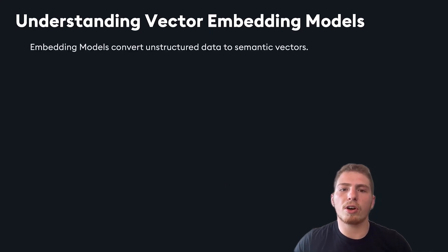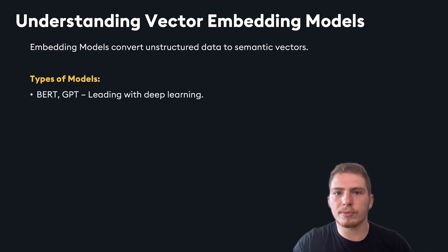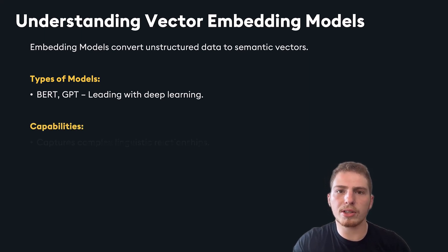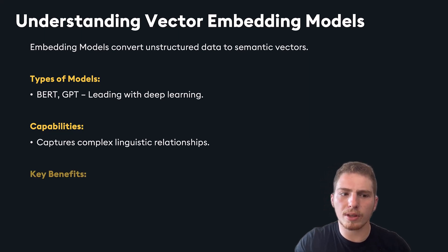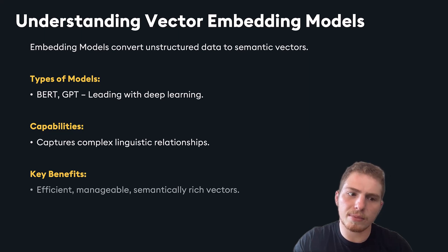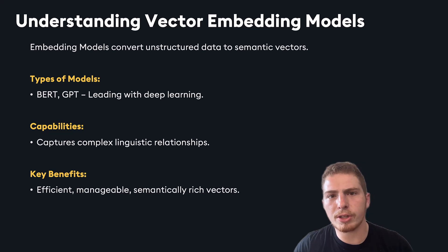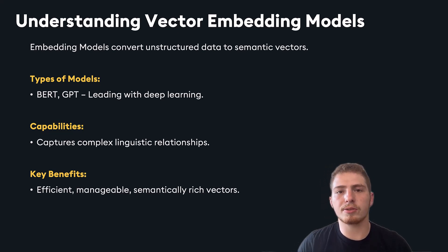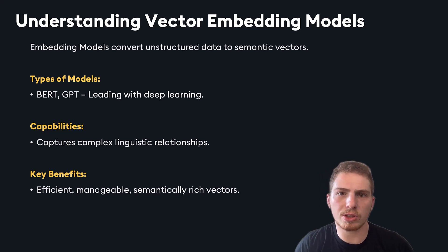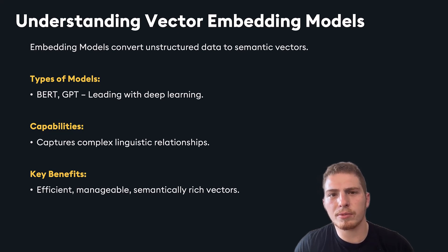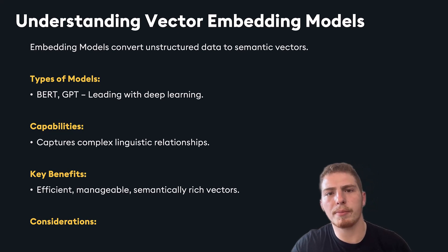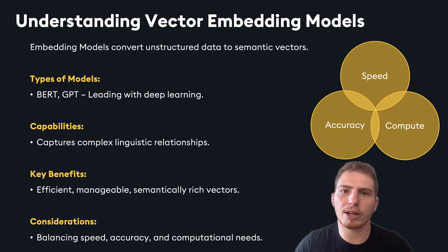Vector embedding models convert unstructured data to semantic vectors. The two state-of-the-art types of models right now are BERT and GPT models, and they both convert your data into vectors using deep learning. Their main capabilities include capturing complex linguistic relationships, and the key benefit is that the vectors they create are efficient, manageable, and semantically rich — meaning that as you scale to millions or even billions of vectors, you can still create effective search systems. When choosing an embedding model, you need to balance speed, accuracy, and computational needs.